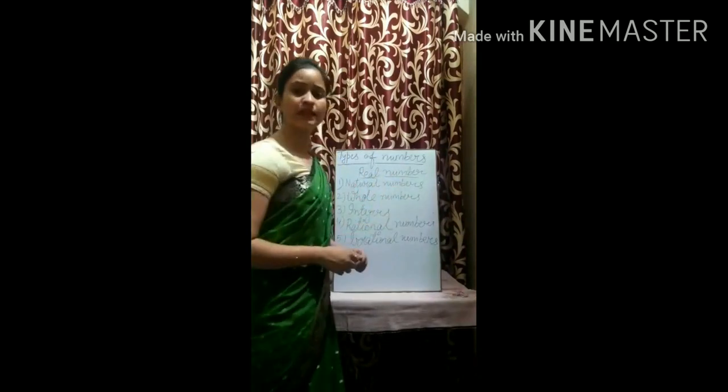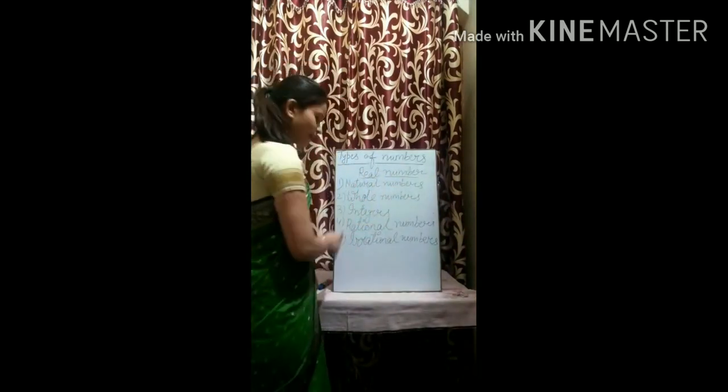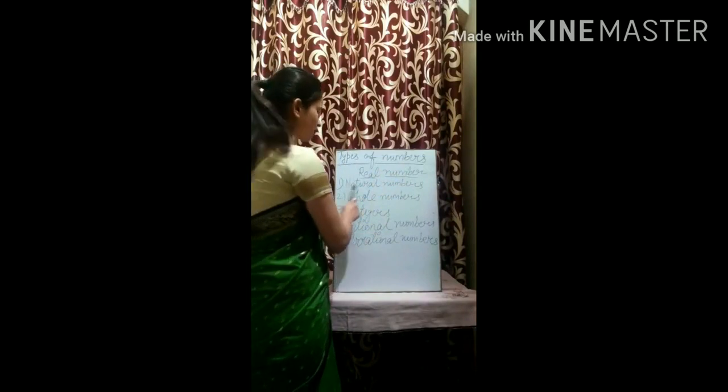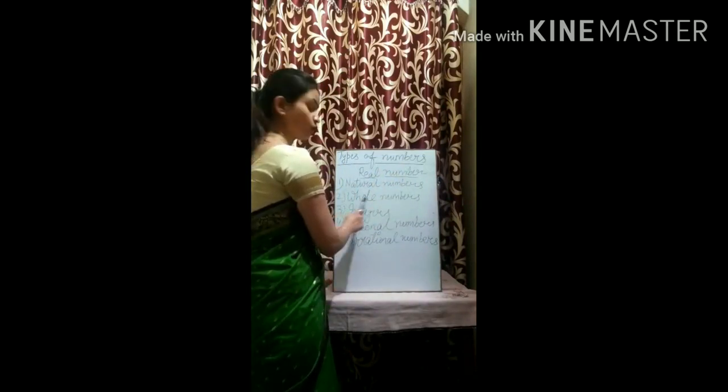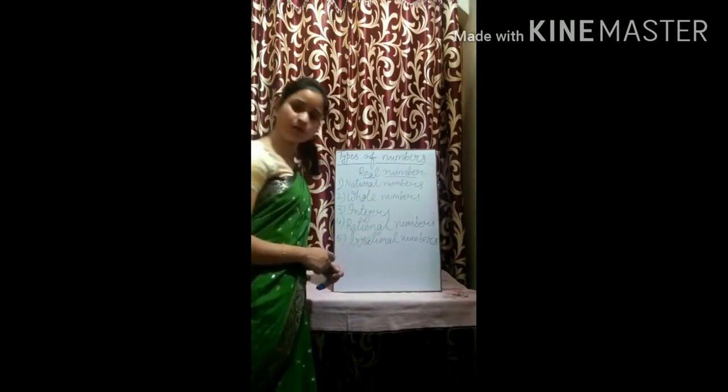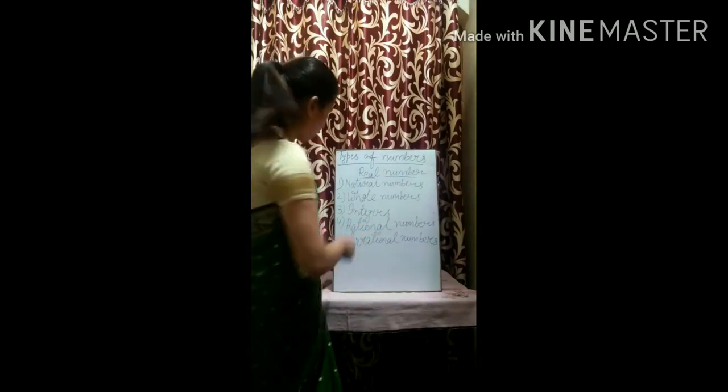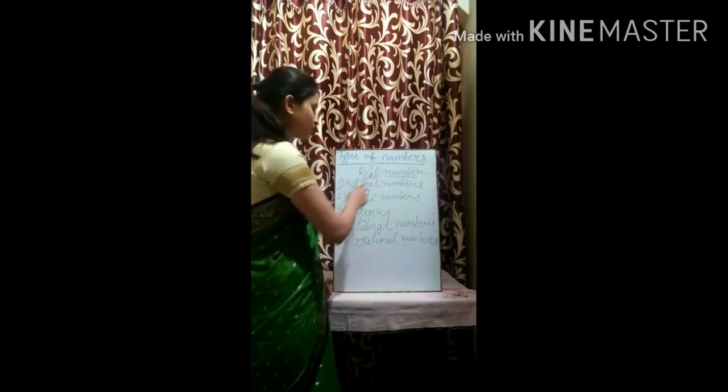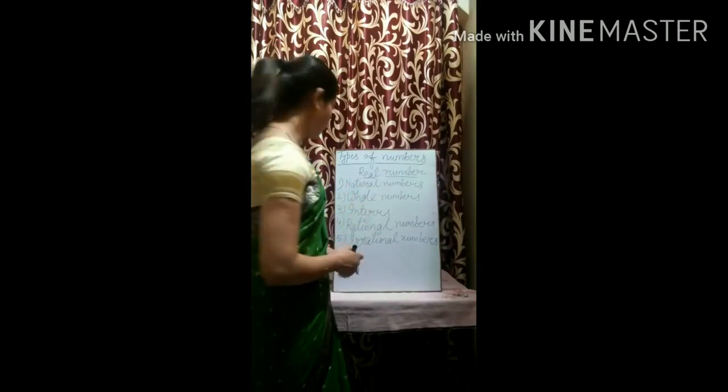Types of numbers. There are five types of numbers. First, natural number. Second, whole number. Third, integers. Fourth, rational number. And fifth, irrational numbers. All these five points come under the real number.